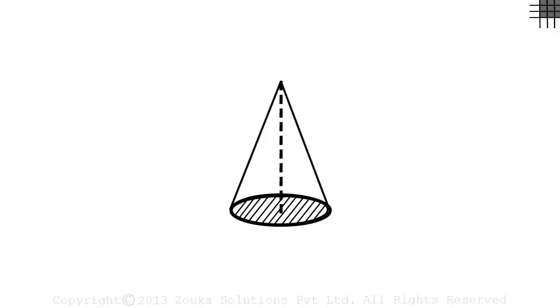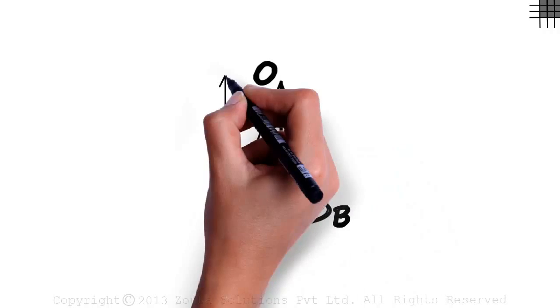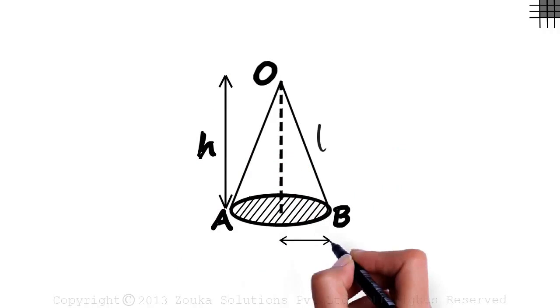Let us name the points O, A, B. Points A and B are marked on the circumference such that AB forms a diameter. Let L be the slant height and H be the perpendicular height and let R be the radius of the circular base.